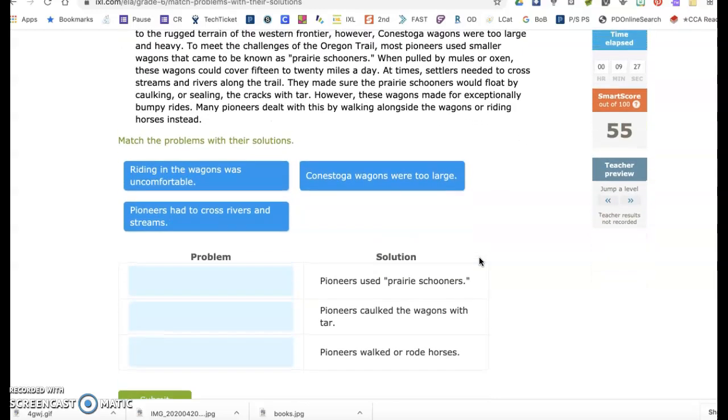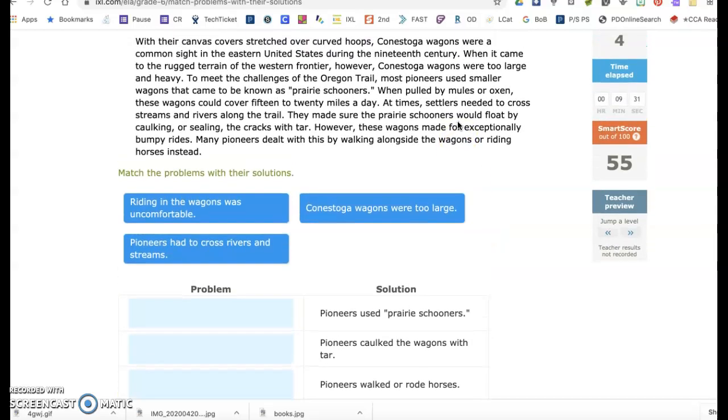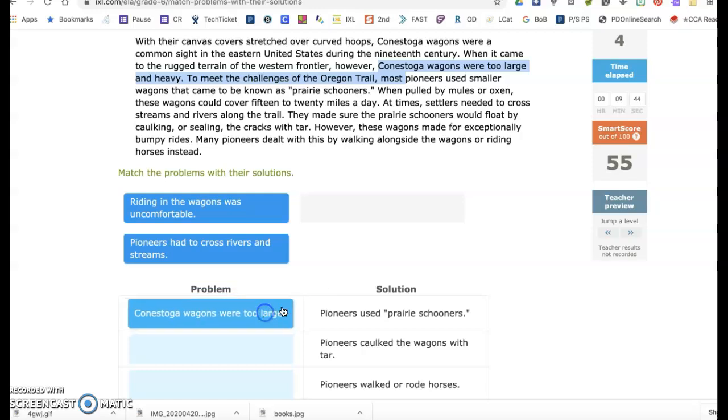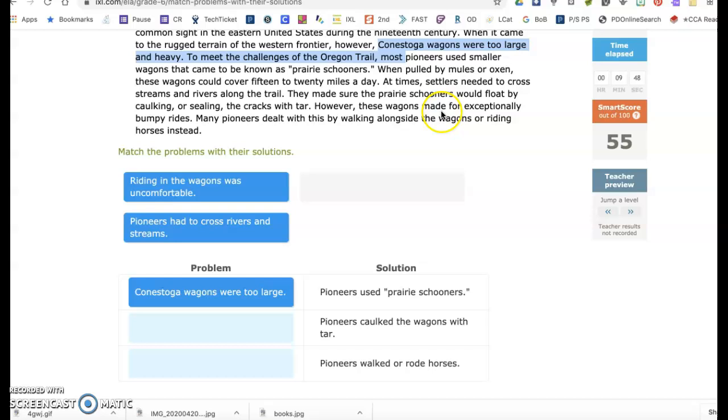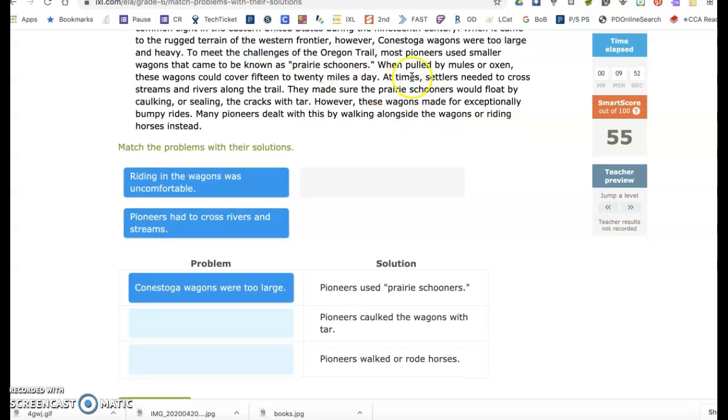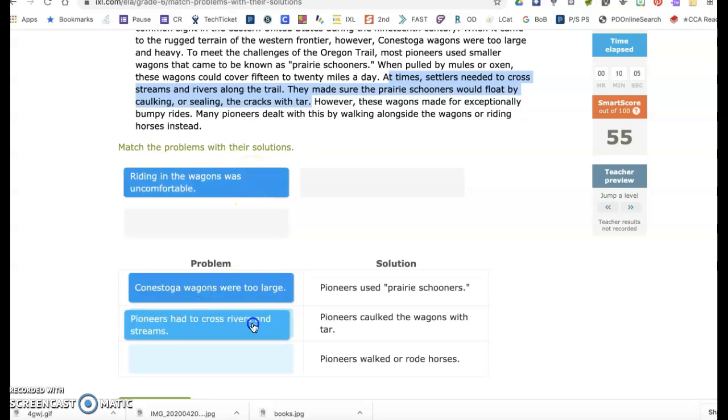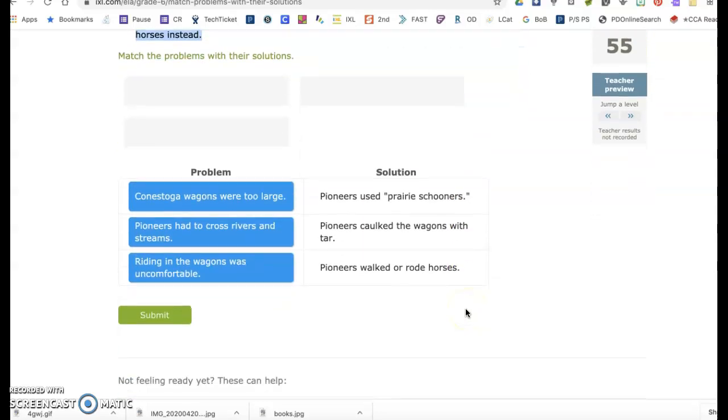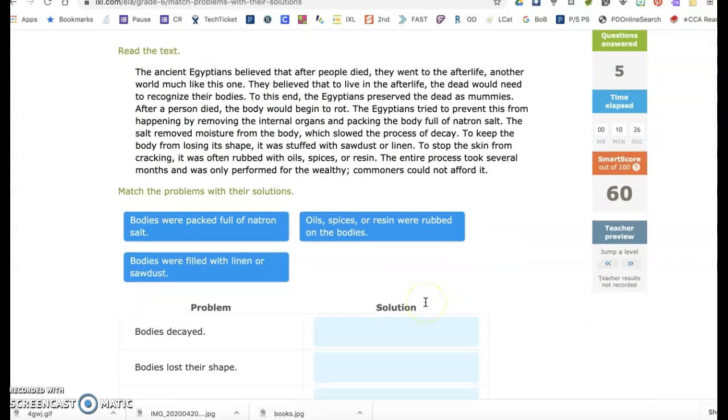So pioneers used prairie schooners. What did that solve? Let's see. I believed that solved because the Conestoga wagons were too large and heavy. So that's where we go here. Pioneers caulked the wagons with tar. I remember this part. At times, settlers needed to cross streams and rivers along the trail. They made sure that the prairie schooners would float by caulking or sealing with tar. So pioneers had to cross rivers and streams. However, these wagons made for exceptionally bumpy rides. Many pioneers dealt with this by walking alongside or riding horses. So riding in the wagons was uncomfortable. Pioneers walked or rode horses. Hopefully that makes sense to you.